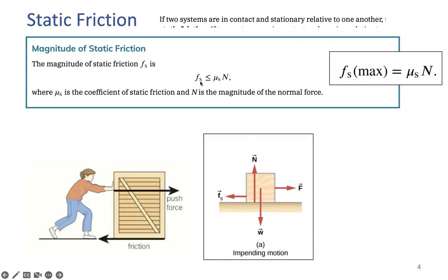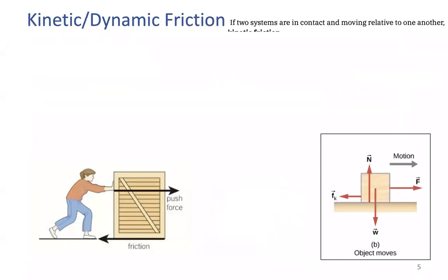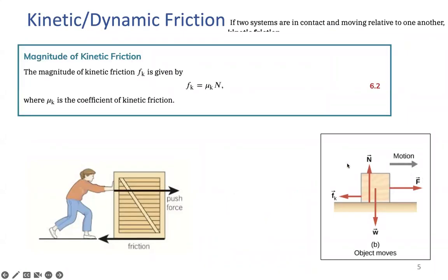The static friction force can be zero when there is no applied force, and it increases as you increase the applied force up to a maximum. If the applied force exceeds the maximum static friction, the object starts to move — the dynamic situation. Now for kinetic friction, it is not less than or equal; it equals a constant: Fk = μk times N, where μk is the kinetic or dynamic friction coefficient and N is the normal force Fn.